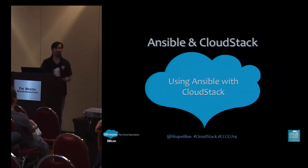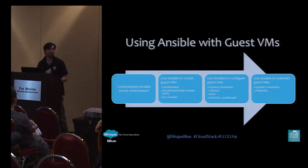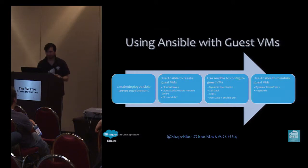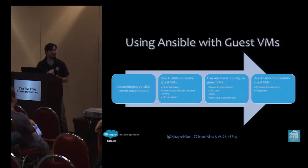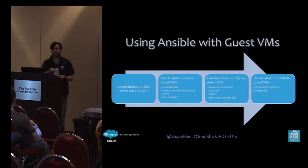Using Ansible with CloudStack: we can create and deploy our Ansible server environment to start with, and then use Ansible to create our guest VMs. We can use CloudMonkey with CloudStack and Ansible modules to create instances — people are working on making that more slick. We also have the EC2 module. Given you can enable the Amazon API compatibility layer in CloudStack, you can use the EC2 module to make commands to start a virtual machine, so it's kind of already there without having to do anything extra.